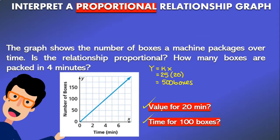What about the time for 100 boxes? Well in this case, x is going to be equal to y divided by k. So again, y is 100 and we're going to divide that by our constant of proportionality which is 25 and that gives us 4 minutes.